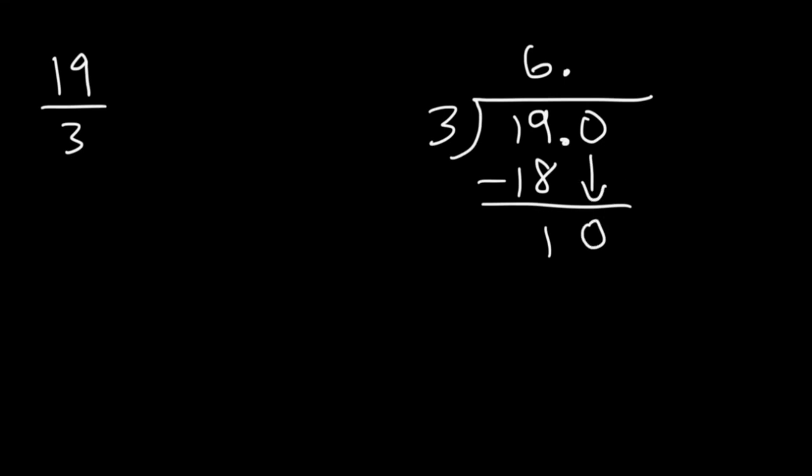So how many times does 3 go into 10? 3 goes into 10 3 times. 3 times 3 is 9, and the remainder is 1. So let's add another 0. And we have a 10 again. 3 goes into 10 3 times. 3 times 3 is 9, and the remainder is 1. Notice that the remainder repeats.